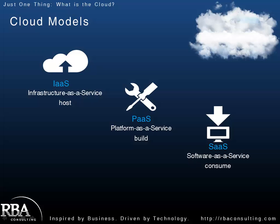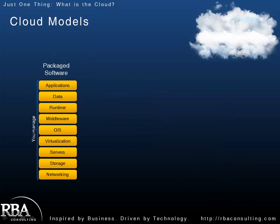Finally, you have the software as a service model where in this case you don't necessarily build anything. You actually just buy software as a service and maybe configure or do some customizations, but you're not really building a solution on top of it. A common example of this would be something like Microsoft's Office 365, where you're paying for that software as a service but you're not really building it. Whereas the platform as a service model applies to the Windows Azure platform, which we'll talk about in a future episode.